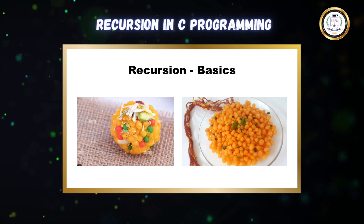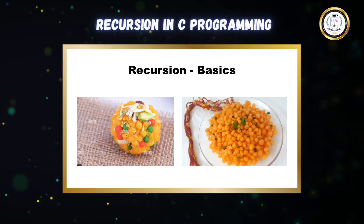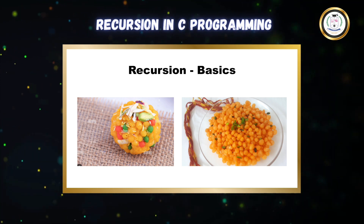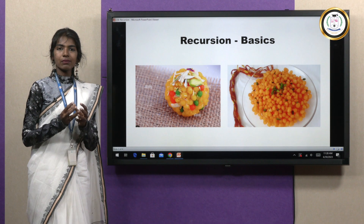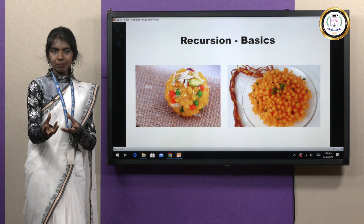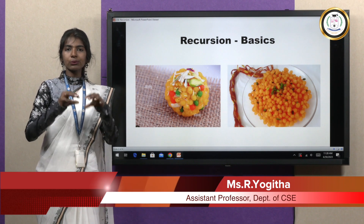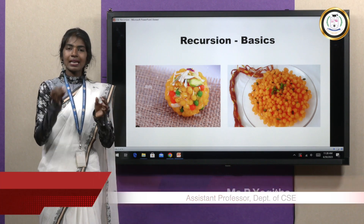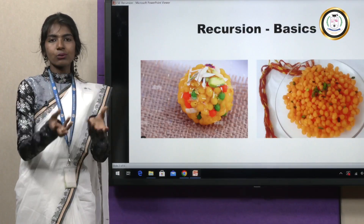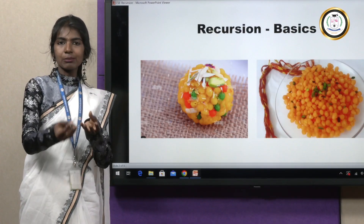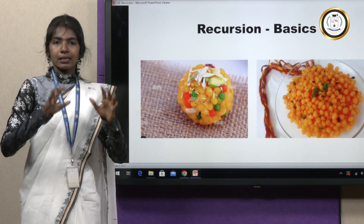Now looking at the picture, you can see two pictures. One is, as you all know, it's a laddu, and the second one is boondis. Now if you give a piece of laddu to a baby, it will not be able to eat it in one go. What it would do instinctively is try to break the laddu into pieces. So why is it doing that? Because it is not able to eat it in one go.